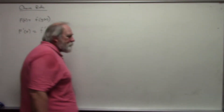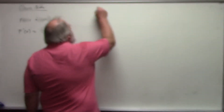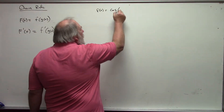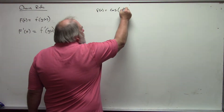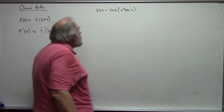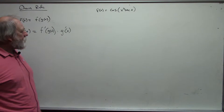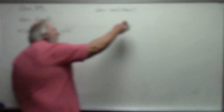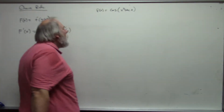Let's look at a couple of examples involving the chain rule and other rules. Suppose I have f of x is equal to the cosine of x squared secant of x. In this case, my outside function is cosine, and inside I have a product.